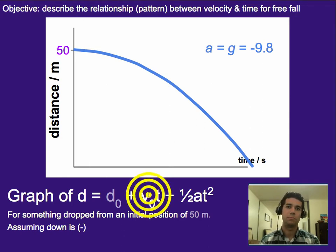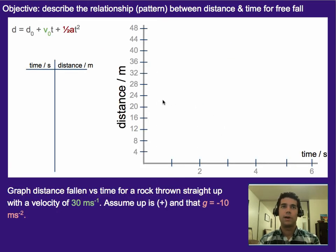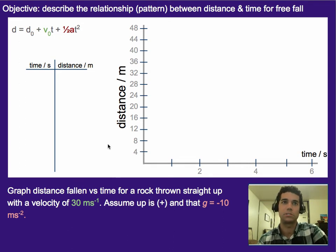We won't talk too much about beginning speed and how that affects things because it's a little bit more complicated. But let's get into how would you graph this. If we had the same thing we had before with the velocity problem, which is graph the distance fallen versus time for a rock that is thrown up at a speed of 30 meters per second. Let's assume up is positive and that gravity is equal to negative 10 meters per second squared.